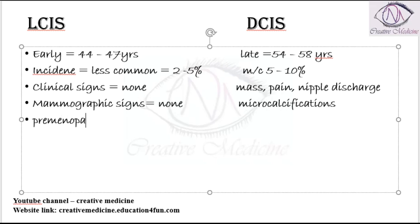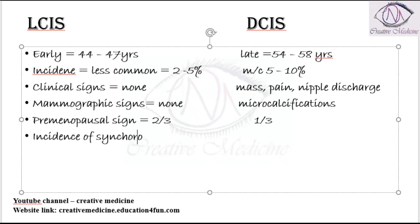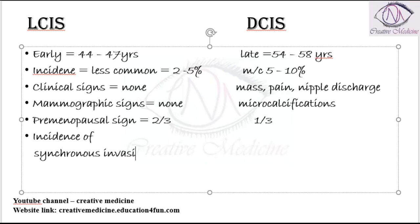Premenopausal signs in lobular carcinoma in situ are seen in one third of patients. The incidence of synchronous invasive carcinoma — that is, invasive carcinoma occurring alongside the in situ lesion — is around 5 percent in lobular carcinoma in situ. Whereas in ductal carcinoma in situ, the presence of synchronous invasive carcinoma is seen in 2 to 46 percent.